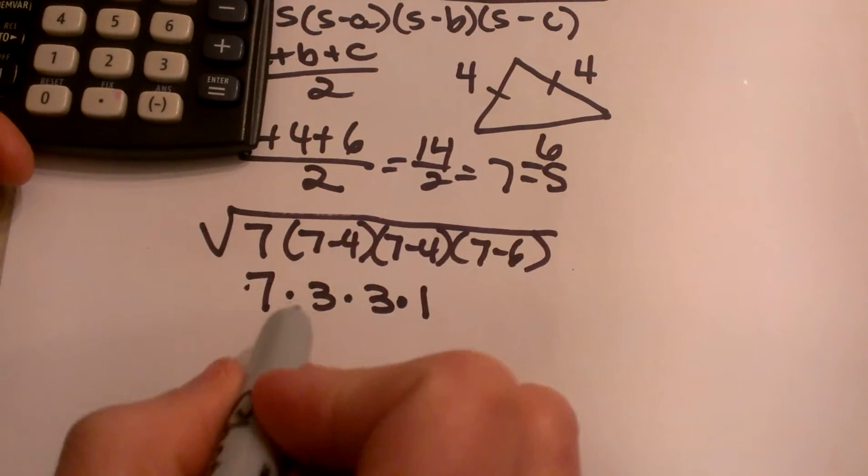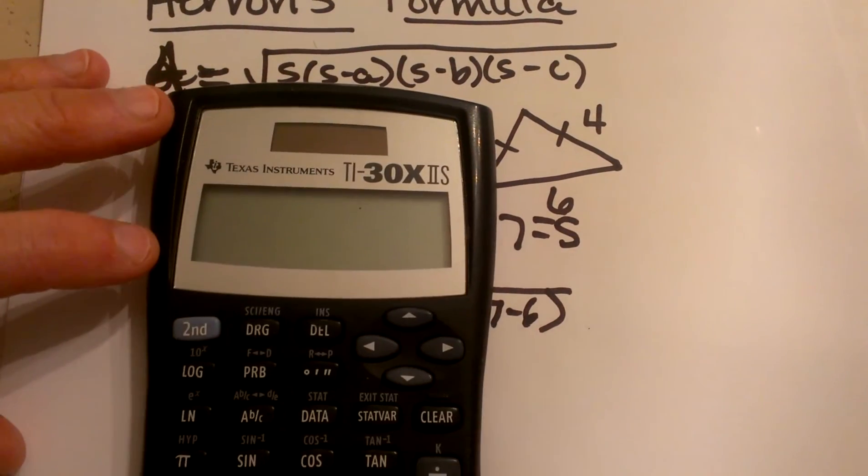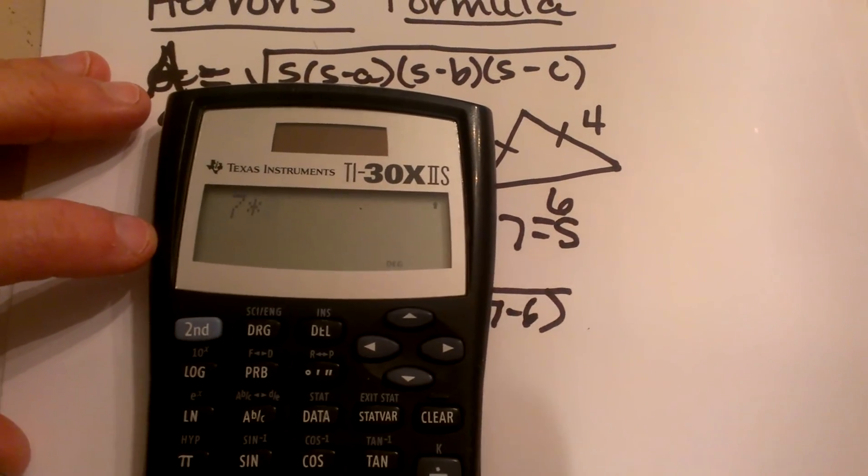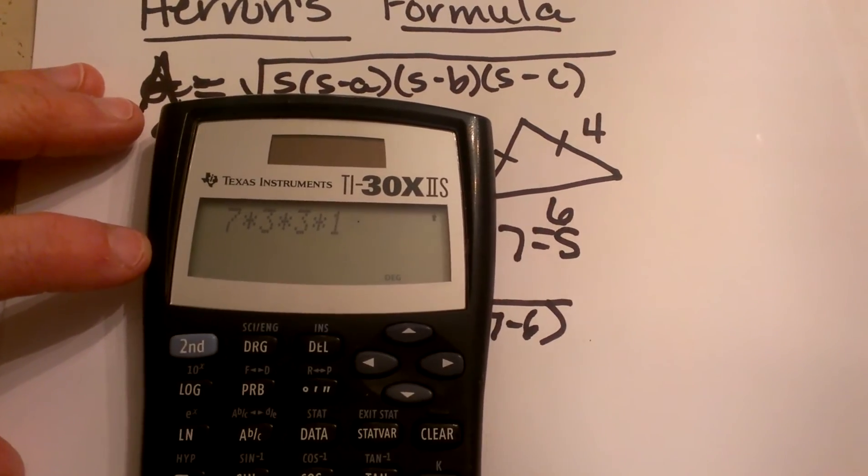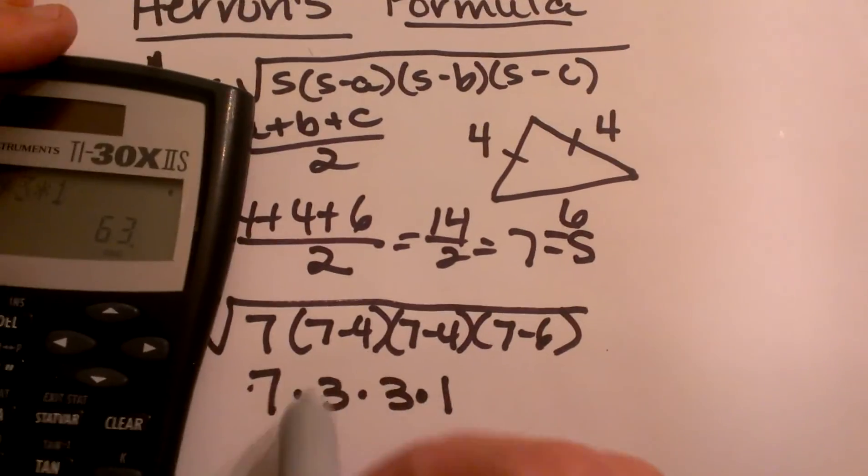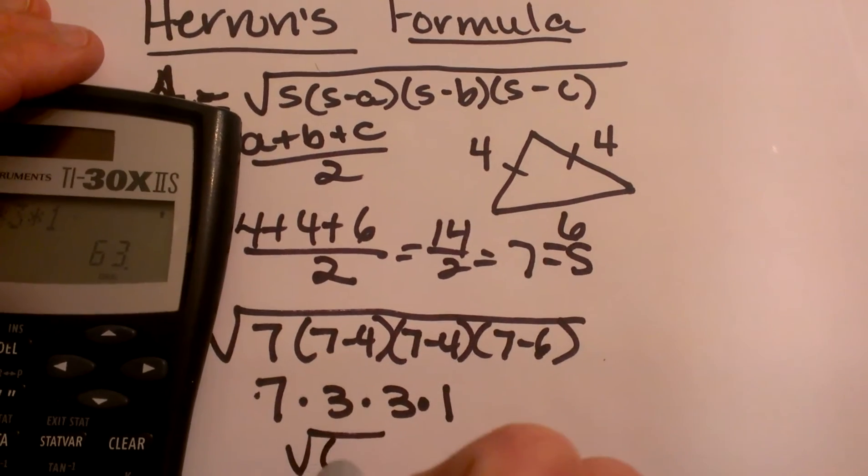So let's multiply that together, so I've got my calculator, 7 times 3 times 3 times 1, and that's 63. So it's the square root of 63.